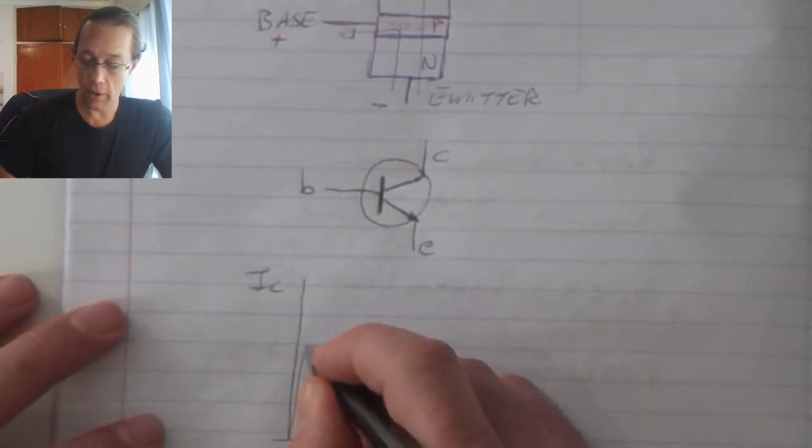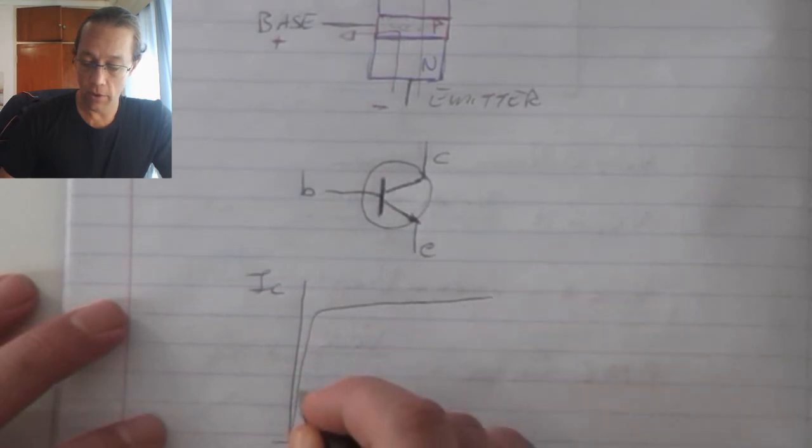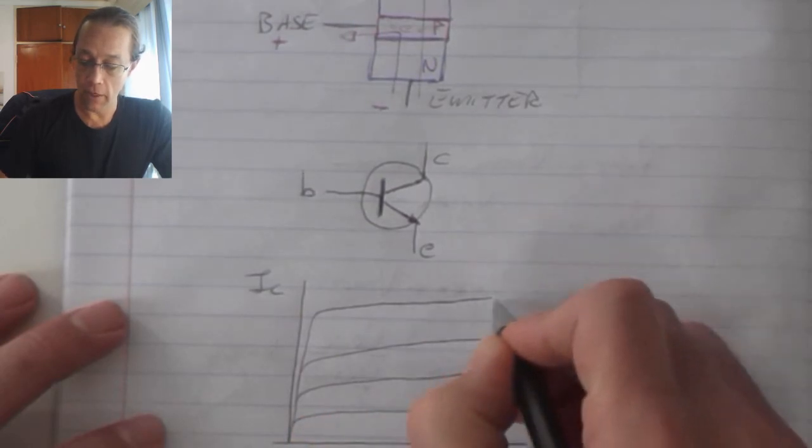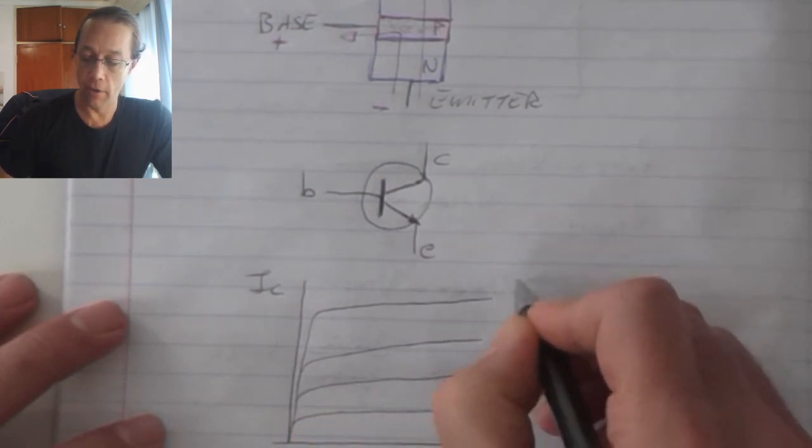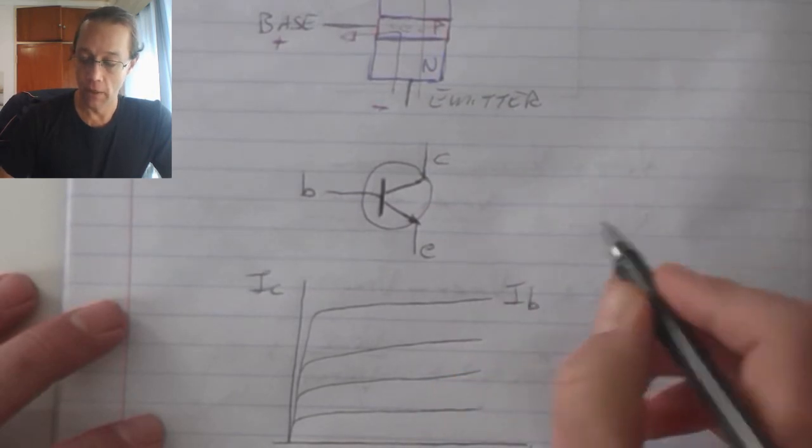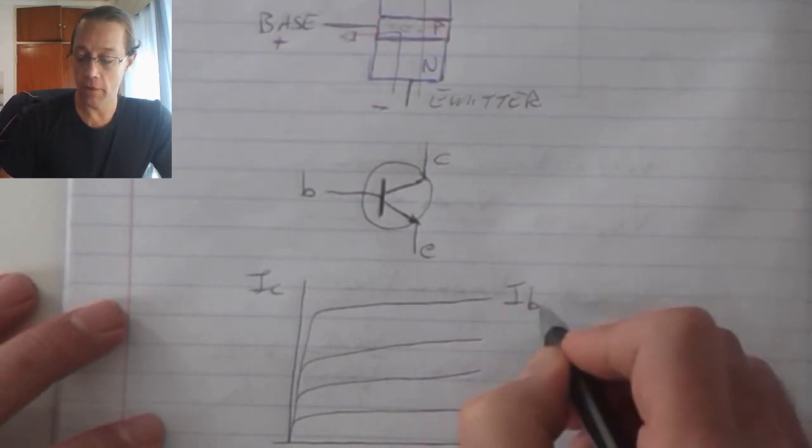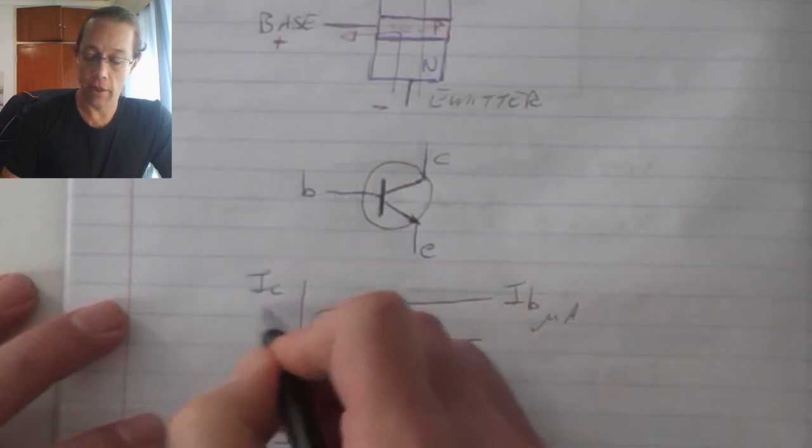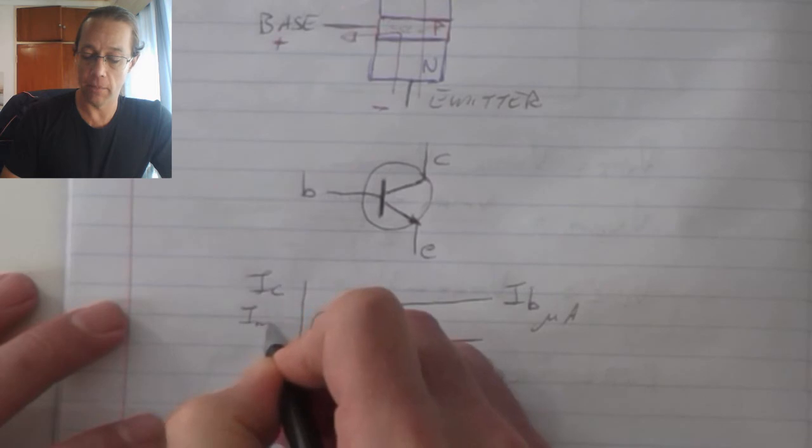Now when we look at the characteristic curve, we see it has many different legs that stick out like that, and each one of these legs represents a different value for the base current. The values of these base currents typically are microamperes, whereas the collector current is indicated in milliamperes.